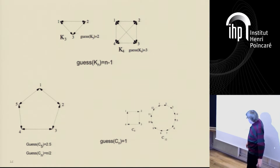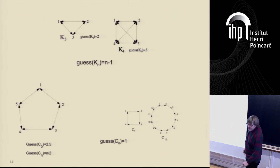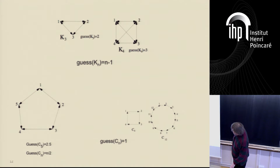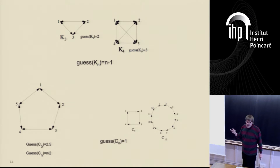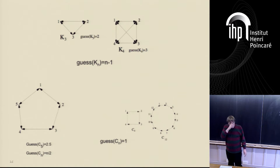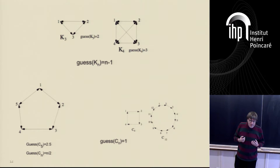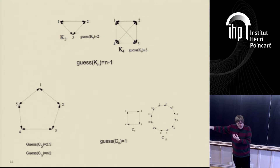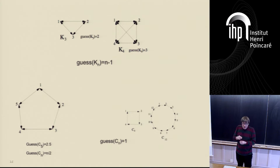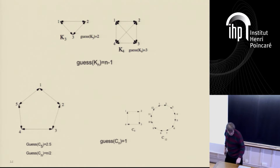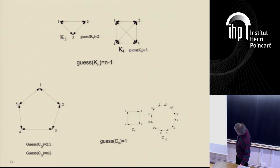For the C5 graph — five players sitting around a table, each seeing both neighbors — it turns out the guessing number is not an integer anymore; it depends on the alphabet. Every time the alphabet size is a perfect square, they can achieve exactly 2.5. Essentially what they're doing is: one die value is coordinated with the person to the right and the other die with the person to the left, achieving a guessing number of 2.5.